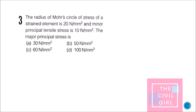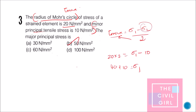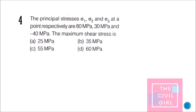Question 3: The radius of the Mohr circle of stress of a strained element is 20 N/mm² and the minor principal stress is 10 — find the major principal stress. The radius of the Mohr circle equals the maximum shear stress. Using the formula tau max = (sigma 1 minus sigma 2) / 2, we substitute to find sigma 1. The answer is option B.